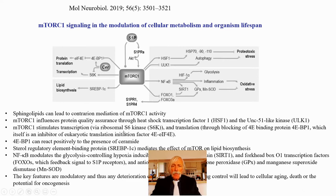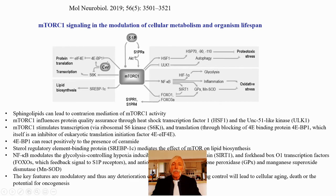mTORC also stimulates transcription through the classical S6 kinase, giving an enhancement of transcription. That's why mTORC is normally considered anabolic — turning on the expression of genes in general. mTORC stimulates transcription via the ribosomal S6K kinase and translation, and it does so by blocking 4E-binding protein 1 (4EBP1). When 4EBP1 is allowed to function, it inhibits eukaryotic initiation factor 4E and therefore inhibits translation. Removing this binding protein via mTORC phosphorylation allows protein synthesis to proceed with polyribosomes and ER-associated ribosomes.